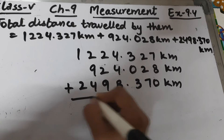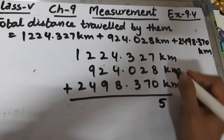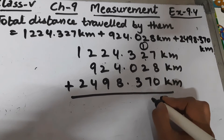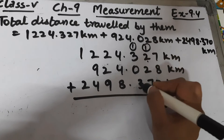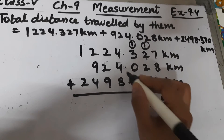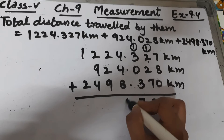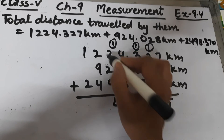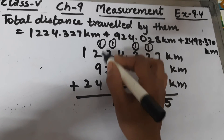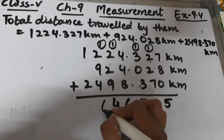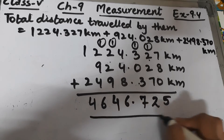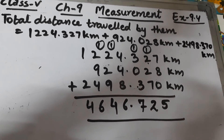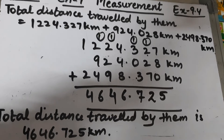Adding all three values column by column: in the decimal places, 7 plus 8 plus 0 is 15, carry 1; continuing the addition through each digit position. The total distance traveled by them is 4646.725 kilometers.